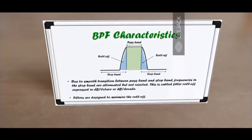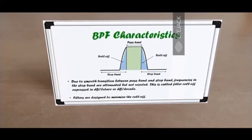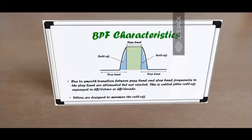In the picture, the green block represents the pass band and everything outside on either side is the stop band. A bandpass filter theoretically accepts every frequency in the pass band and rejects everything in the stop band. But as we can observe, it ends up accepting something beyond the pass band as well — some frequencies in the stop band. This happens because of the smooth transition: frequencies in the stop band are not completely rejected but are attenuated, and the attenuation increases as we move further out. This is technically referred to as filter roll-off, expressed in decibels per octave or decibels per decade. Filters are designed to minimize the roll-off — it's not possible to eliminate it completely, but it is possible to mitigate it.